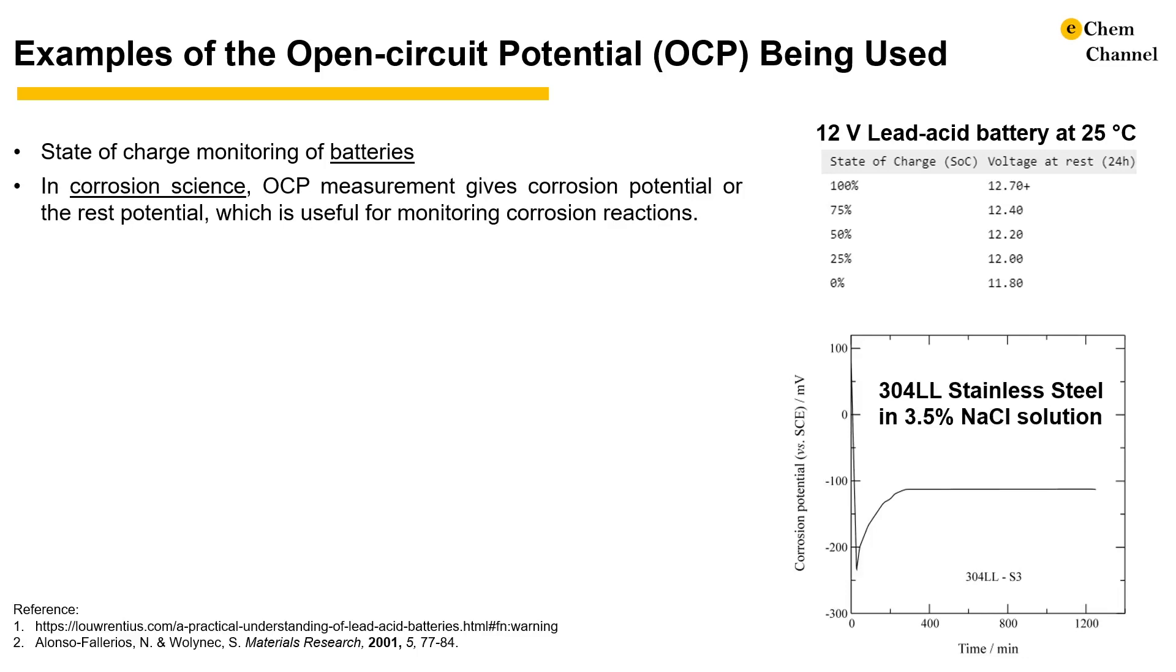In corrosion science, OCP is useful in monitoring corrosion reactions. For example, the right figure shows the process of a 304LL stainless steel, where the oxide film formed in air experienced reductive dissolution and then is replaced by a new oxide film formed inside the solution.